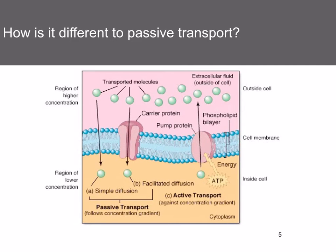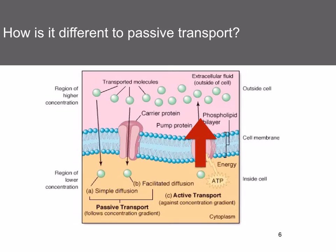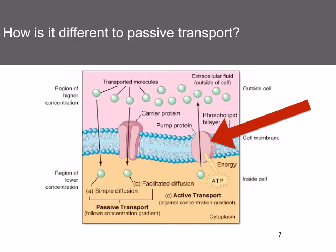How is this different to passive transport? If you look at this diagram, you'll notice the differences between active transport on the right and passive transport on the left. Active transport uses metabolic energy in the form of ATP. The materials are moving against a concentration gradient. The carrier proteins are acting as pumps. And the process is selective, with specific substances being transported.